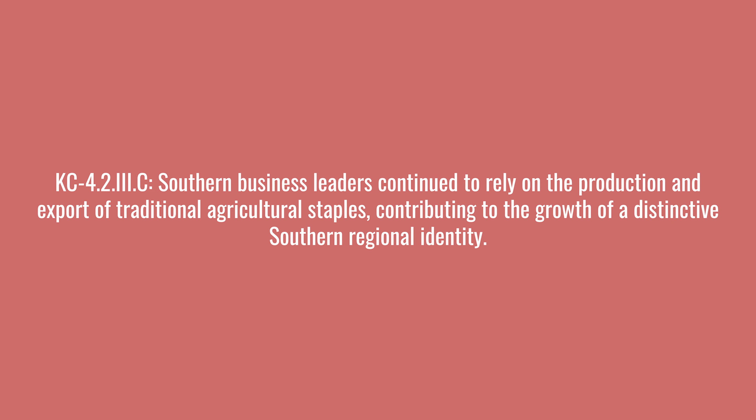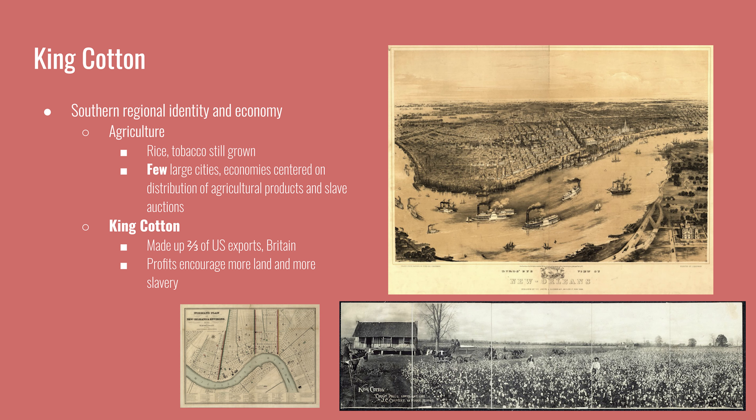The first key concept is that Southern business leaders continued to rely on the production and export of traditional agricultural staples, contributing to the growth of a distinctive Southern regional identity. The agricultural staples that were grown were rice, tobacco, and later on, cotton. With the growth of the cotton industry due to the invention of the cotton gin, Southern regional identity was further ensconced in this agricultural identity.